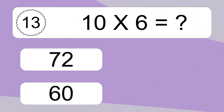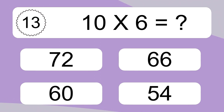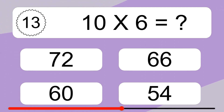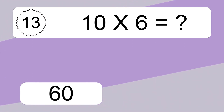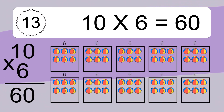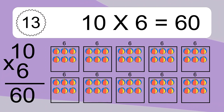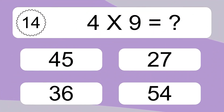10 times 6 equals what? 10 times 6 equals 60. We have 10 boxes, and each box has 6 colorful balls inside. If you count all the balls in all the boxes together, you will have 10 times 6 balls. This equals 60 balls.